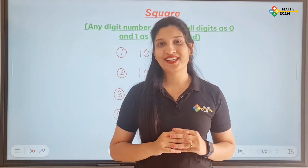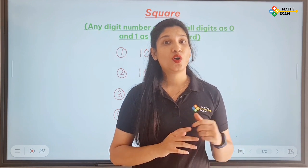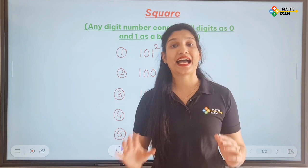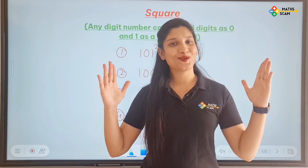Namaste everyone. Welcome to our new trick of today, and today's trick is a square of any digit number which consists all the digits as 0 and the bodyguard as 1.